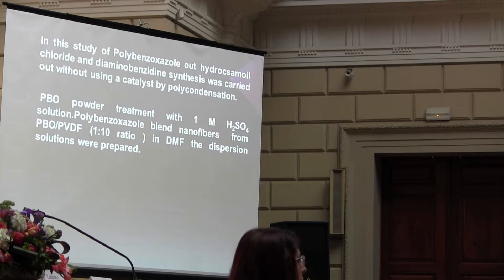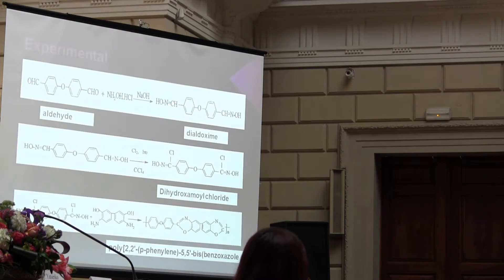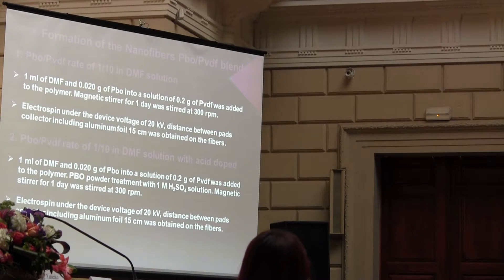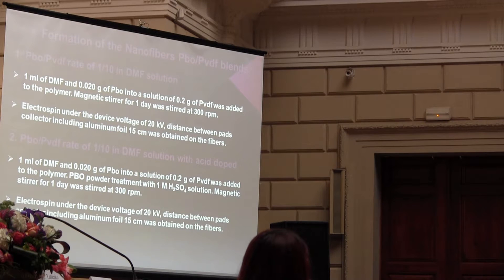We prefer PVDF with polyimide acid because you can make nanofibers easily. Normally with polyimide acid alone, it is not easy to make nanofibers. We use half polyimide acid. You can see how sensitive our material, polyimide acid, is. Experimental part: we prepared two solutions. First solution — PVDF and polyimide acid at a ratio of one to one in DMF solvent. Under a voltage of 20 kV, distance between tip and collector of 15 cm, with tape on the fibers.